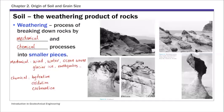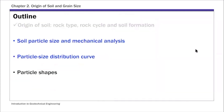That's a very brief overview of rock types and rock cycles. As mentioned, the reason we're concerned with these is because soils come from rocks — soils are the weathering products of rocks. The next two topics, soil particle size and mechanical analysis, and the particle size distribution curve, are really the core of this chapter.